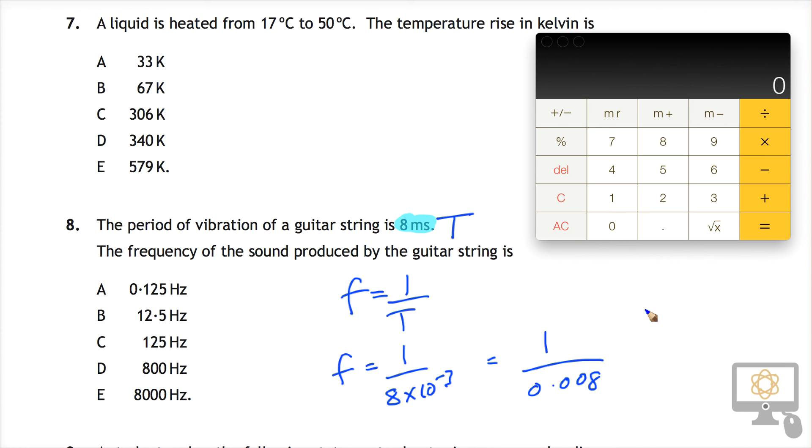So we'll just do that in the calculator. So the value is 1 divided by 0.008. Let's see what we get. 125. And so therefore our answer is evidently C, 125 Hz.